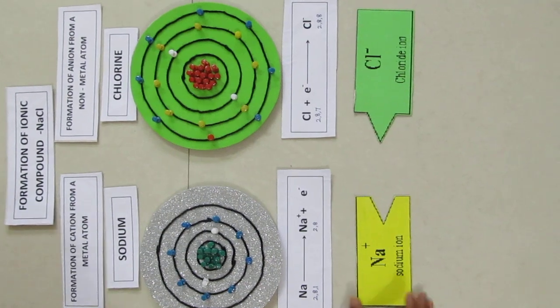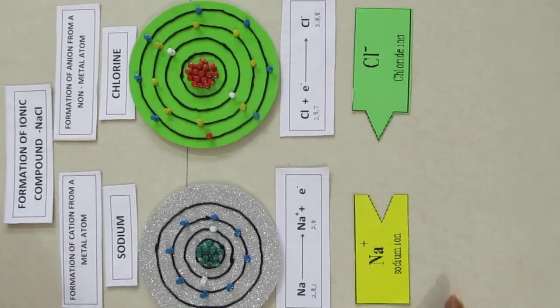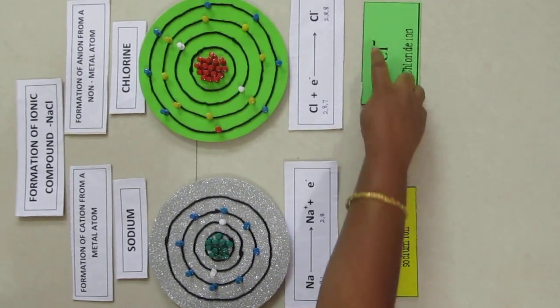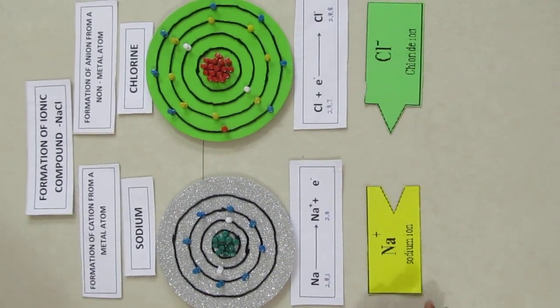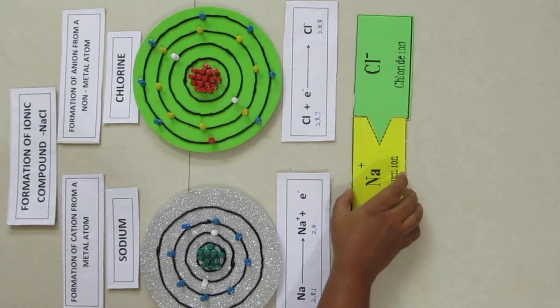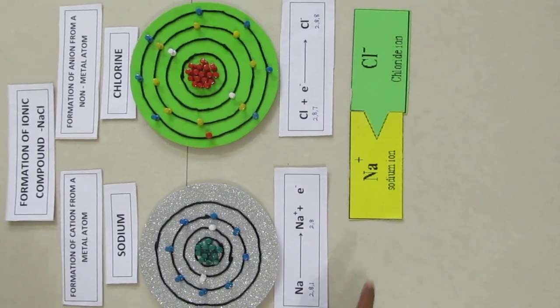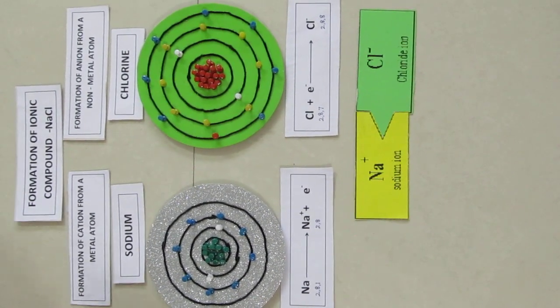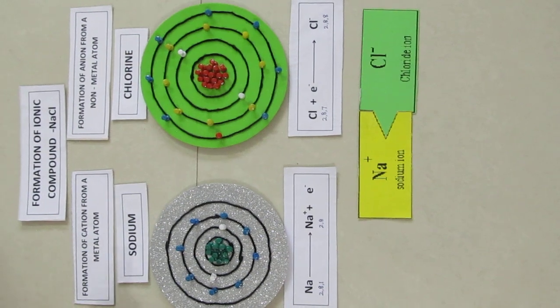Sodium cation and chloride anion being oppositely charged, attract each other and are held by strong electrostatic force of attraction to exist as sodium chloride molecule.